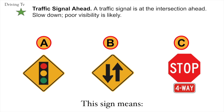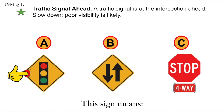Traffic signal ahead. A traffic signal is at the intersection ahead. Slow down. Poor visibility is likely. The correct answer is A. Traffic signal ahead.